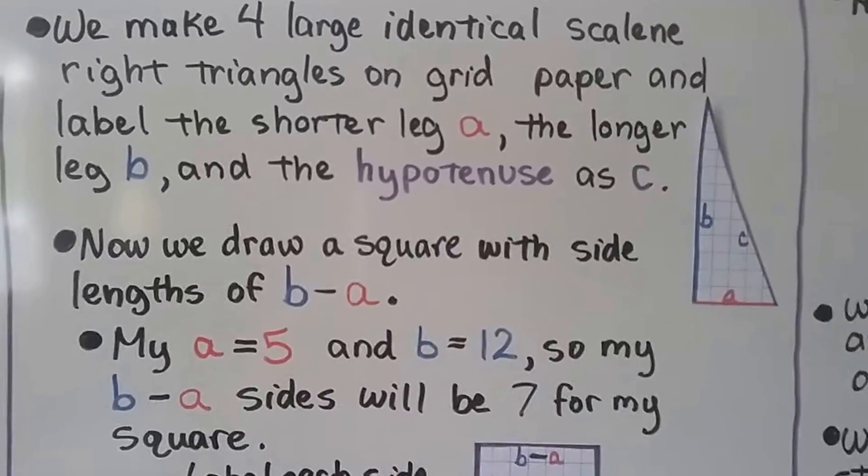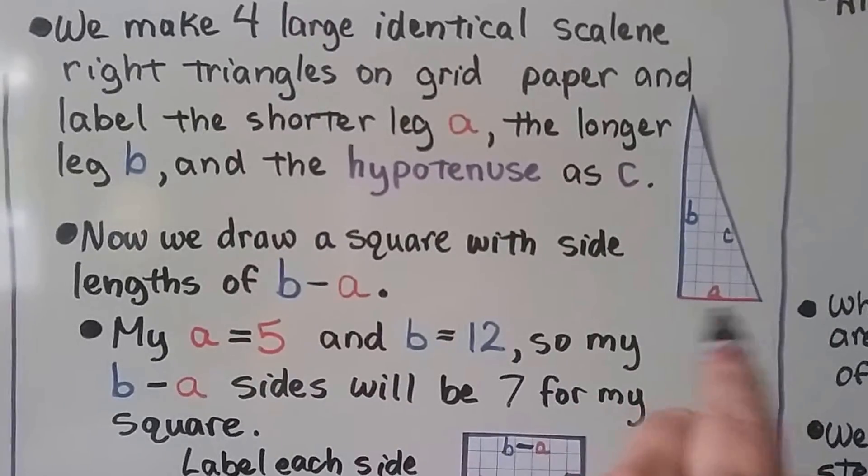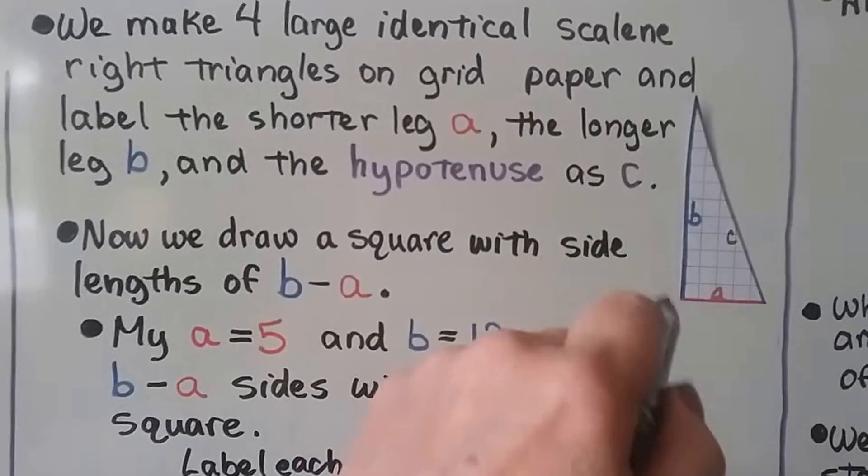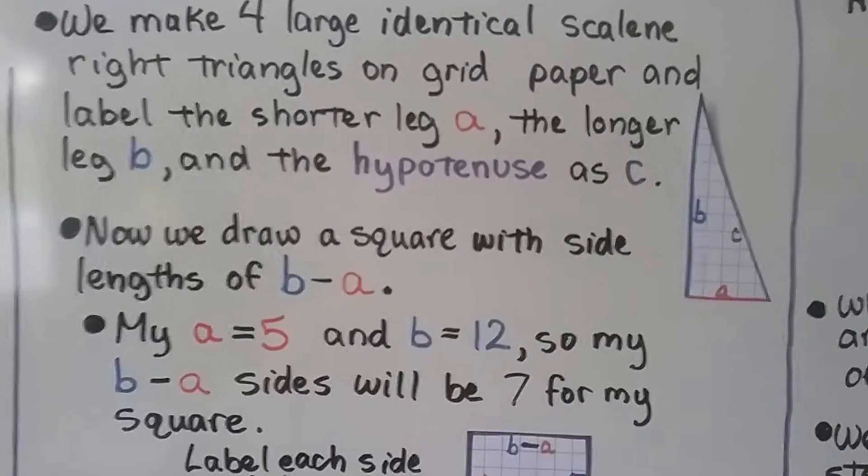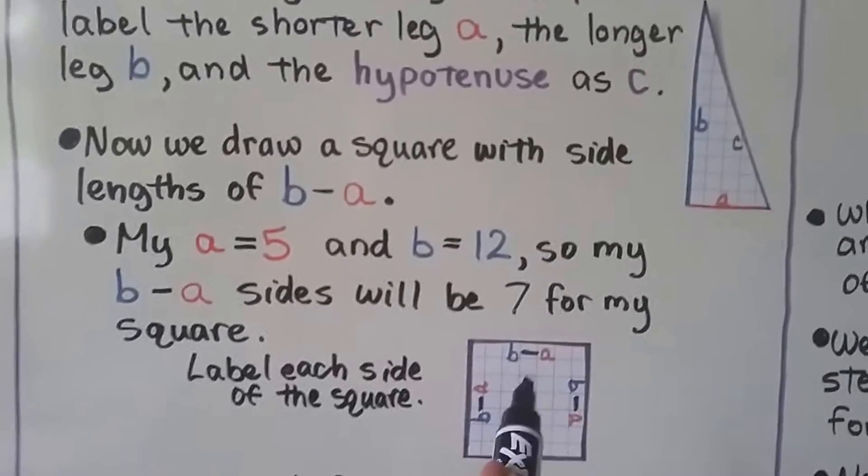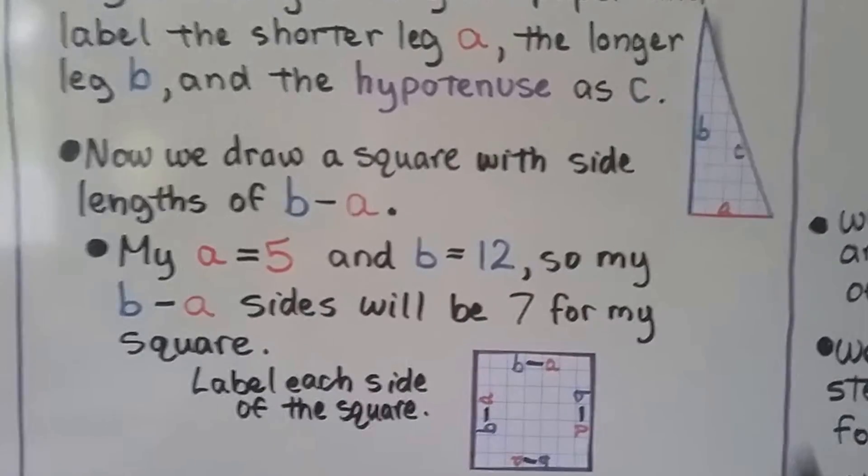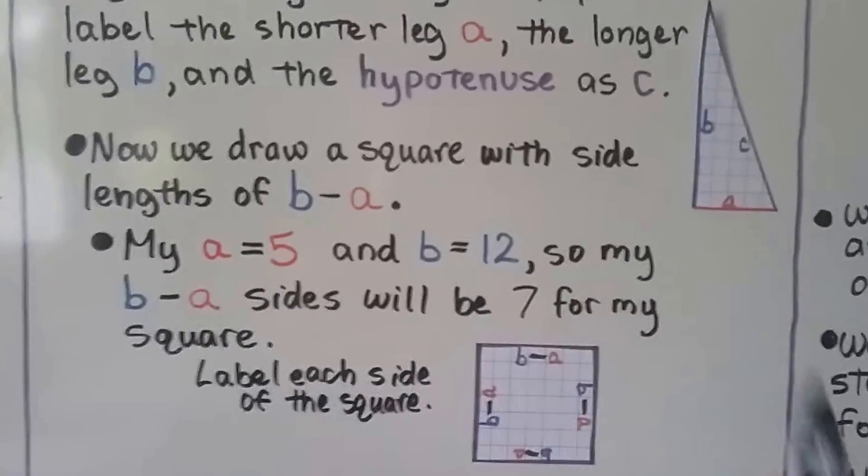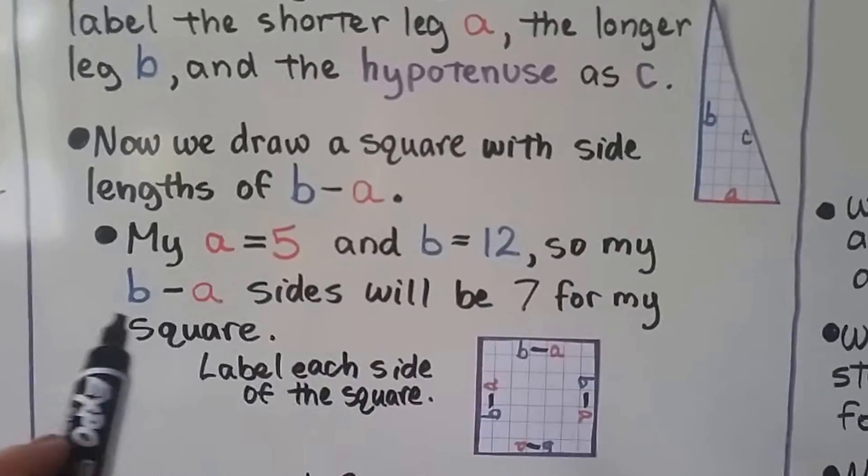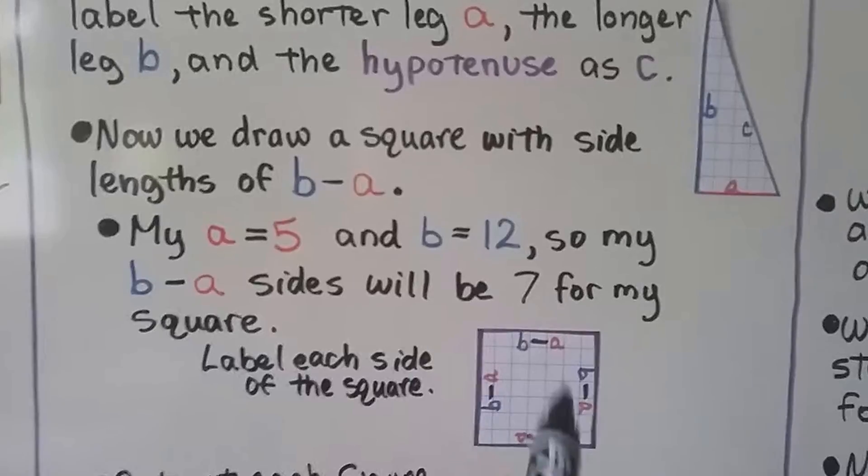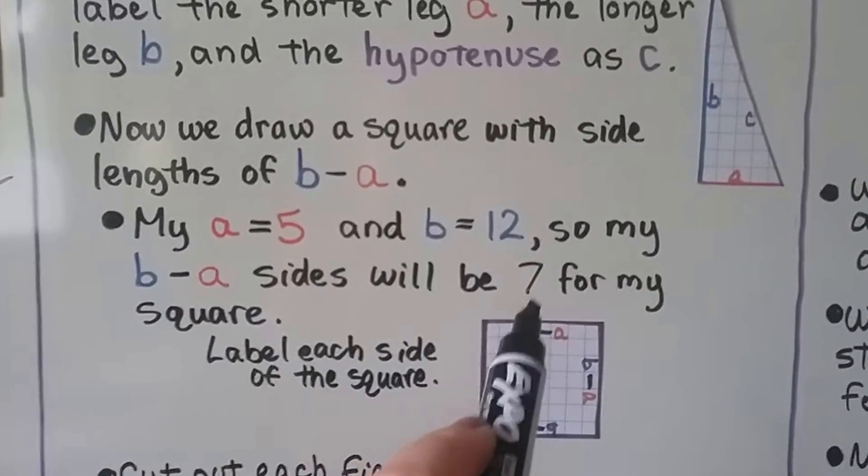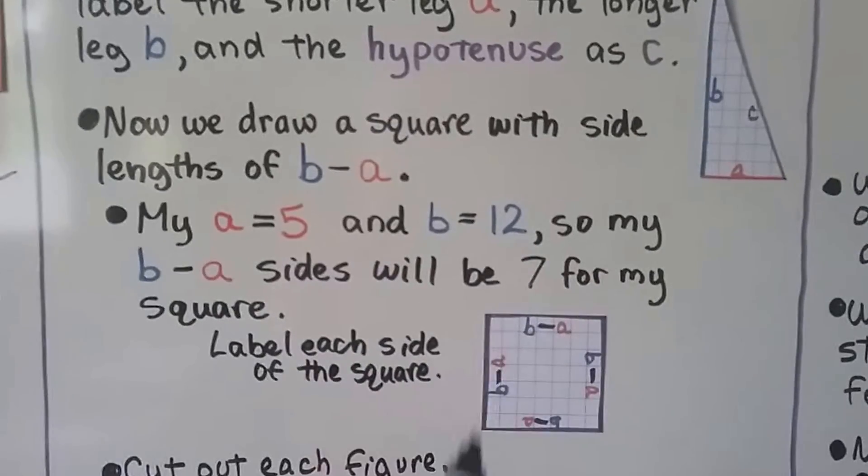So we need four of those. And you can make your a any number of units you want or b. You can make that any number of units you want. So now we draw a square with the side lengths of whatever your b was minus a. So my b is a 12 and my a is a 5. So my sides of my little square here are going to be 12 minus 5 or 7 units across and 7 units down.